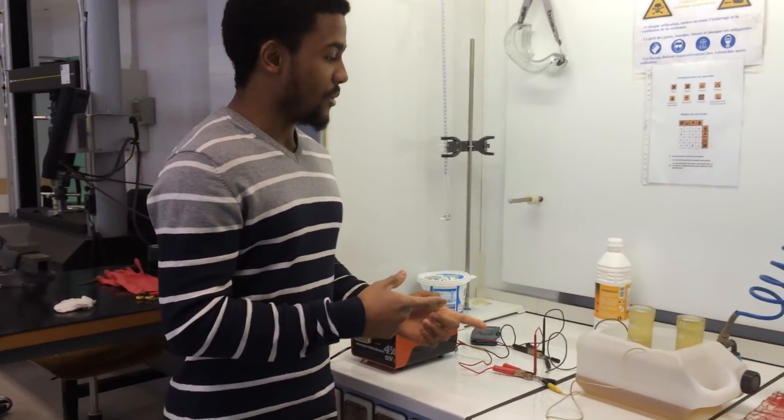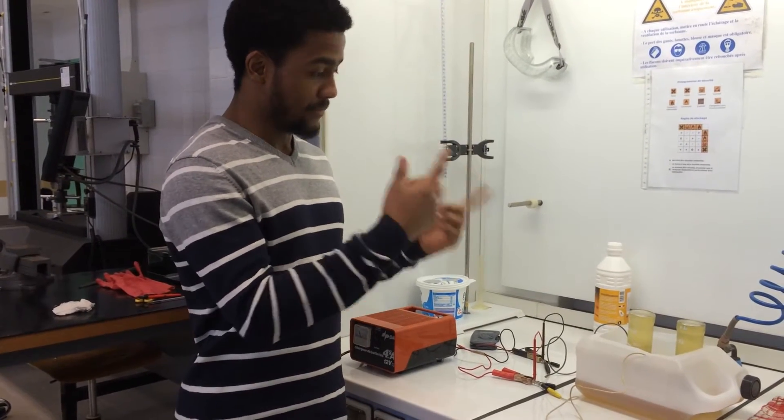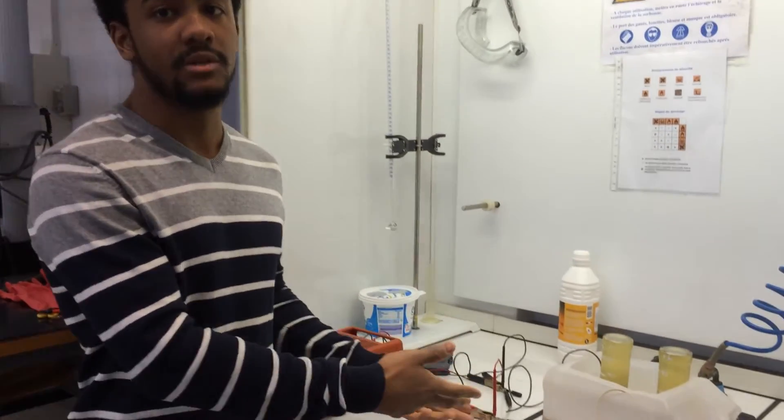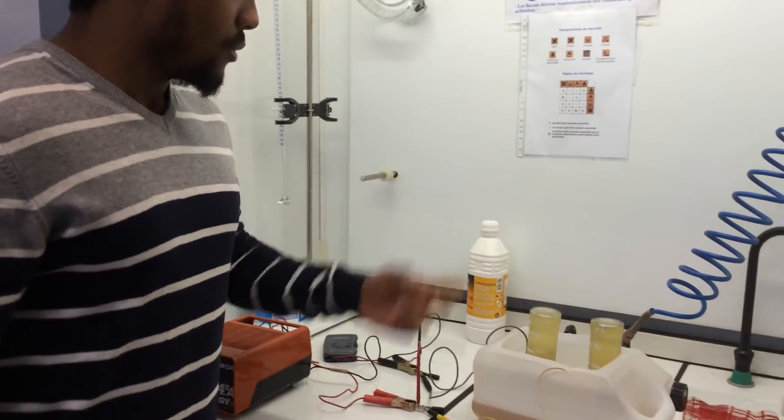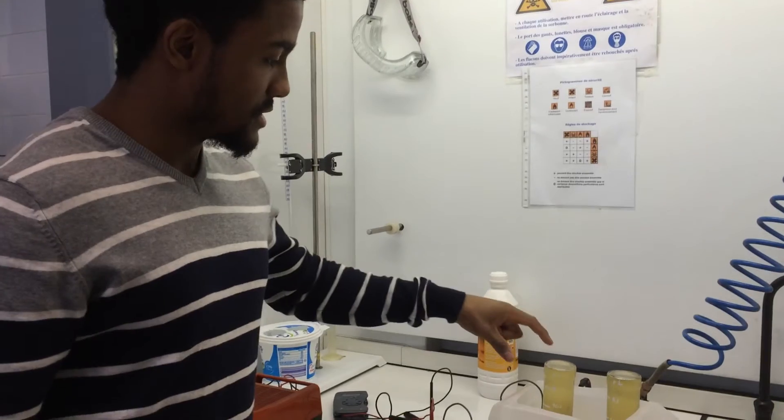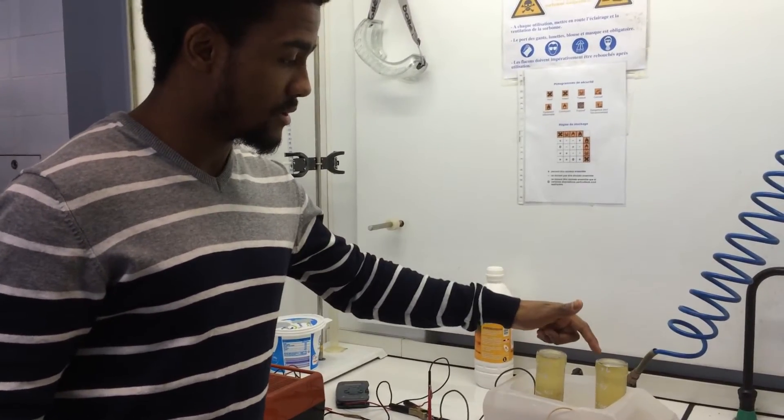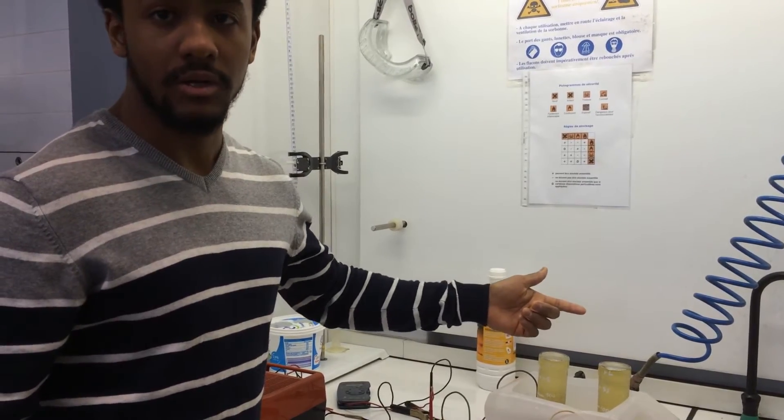Here we have our experimentation for electrolysis of P. We have two electrodes. This electrode can produce hydrogen and this one produces oxygen.